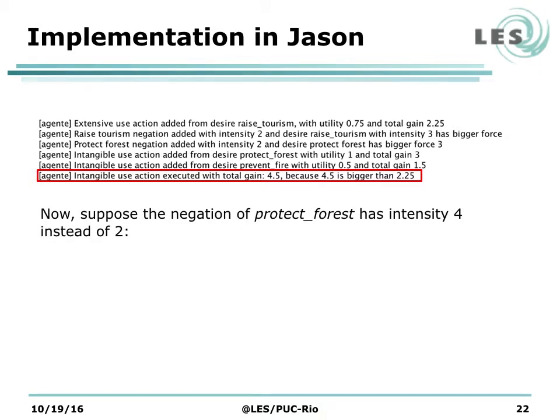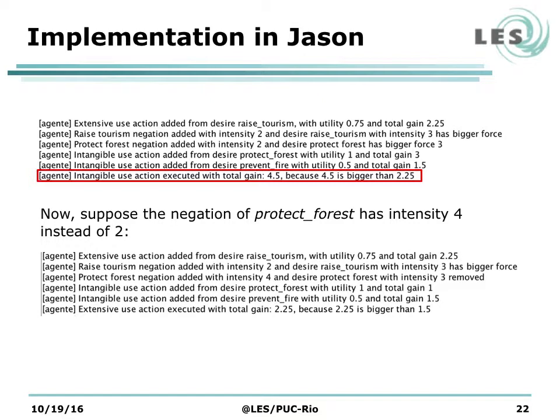Now, suppose the negation of protect forest has intensity 4 instead of 2. In this case, the desire to protect forest is removed from the agent's knowledge base, and the gain for the action intangible use is just 1.5 from the desire to prevent fire. Since 2.25 is bigger than 1.5, the agent selects the extensive use action instead.